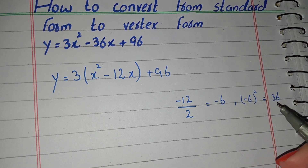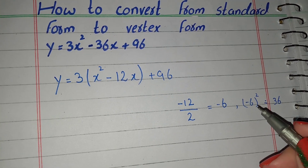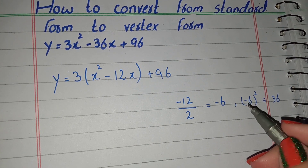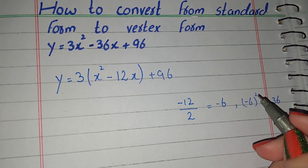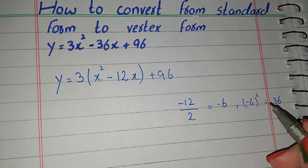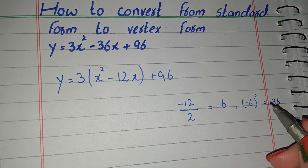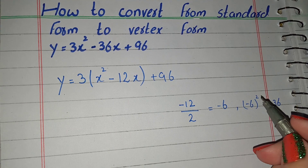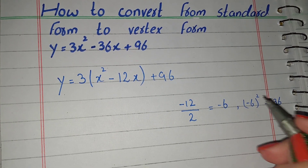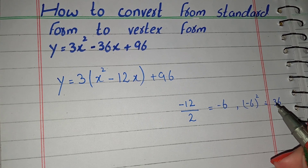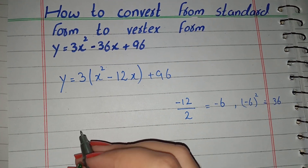Negative 6 squared means negative 6 times negative 6, which is 6 times 6 equals 36. Negative times negative is positive. When you have a negative sign in the base and the power is even, the answer is positive. When the power is odd, you write a negative sign with the answer.